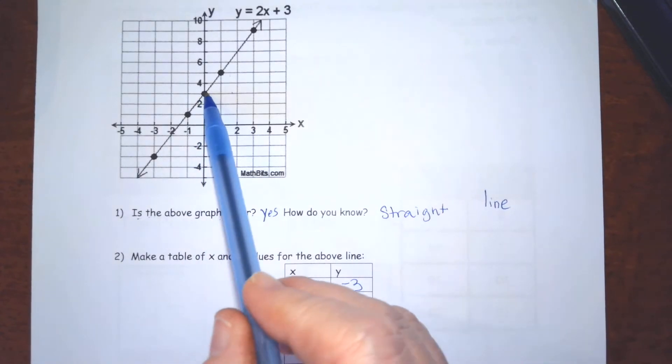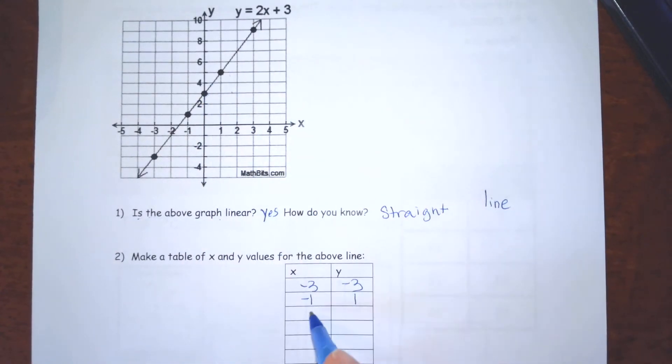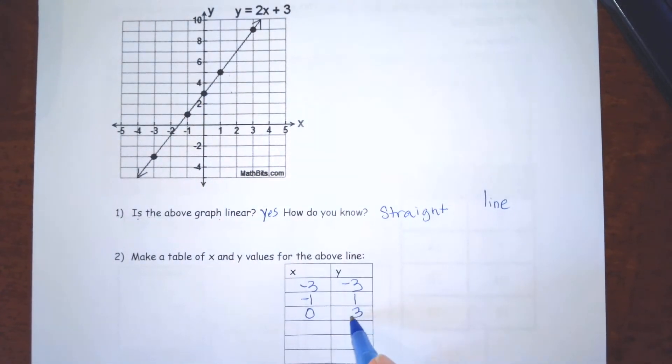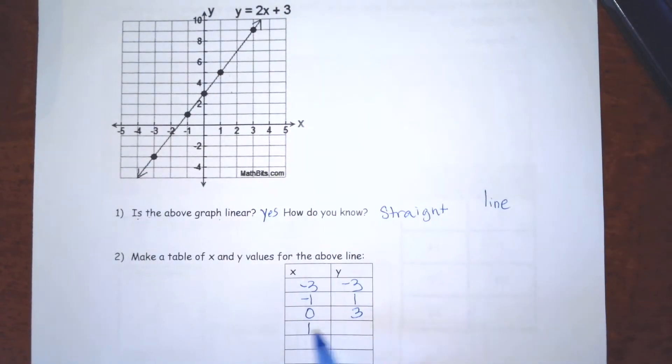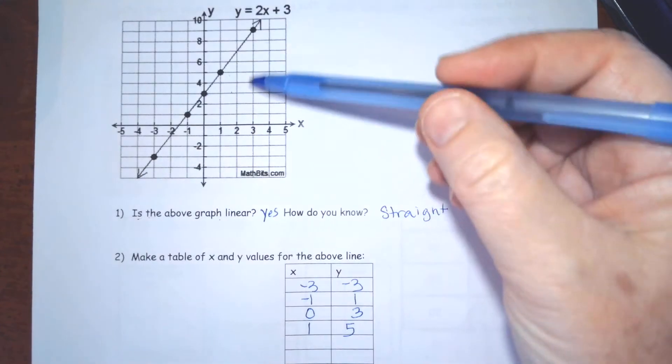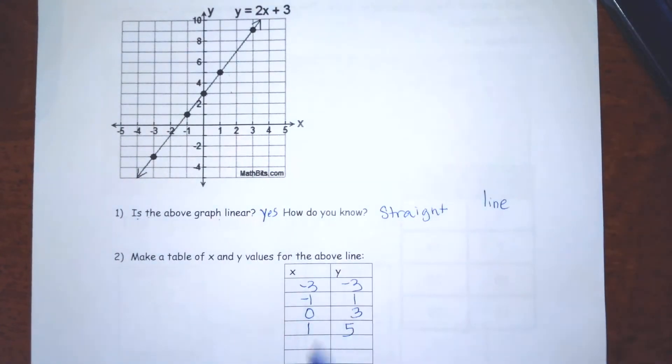And this point is 0, 3. And this point is 1, 5. And this point is 3, 9.